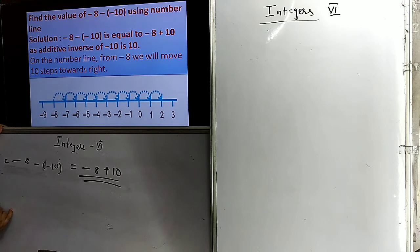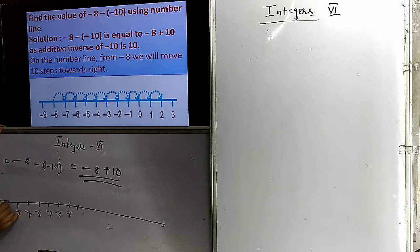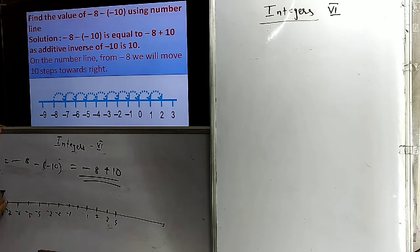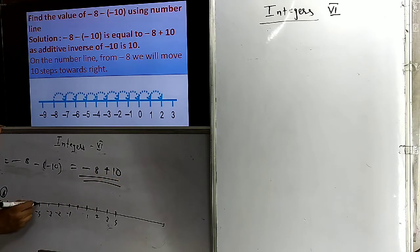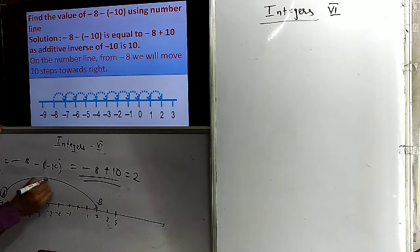On the number line, first we go to minus 8. Then we have to add 10, which means we move to the right side 10 places: 1, 2, 3, 4, 5, 6, 7, 8, 9, 10. After moving 10 places to the right, we arrive at 2. So minus 8 plus 10 equals 2.